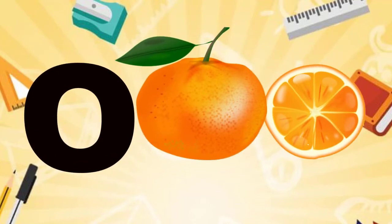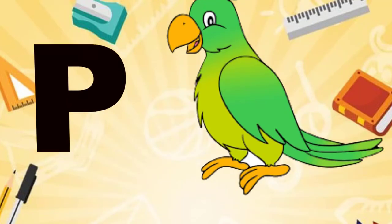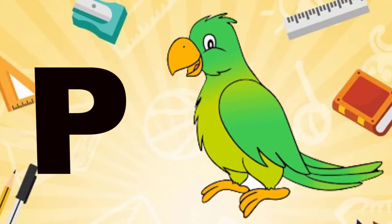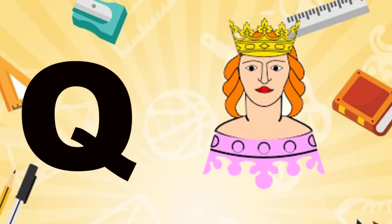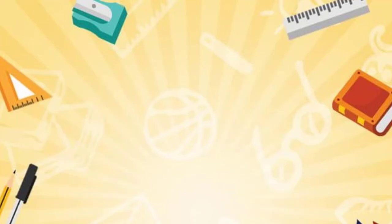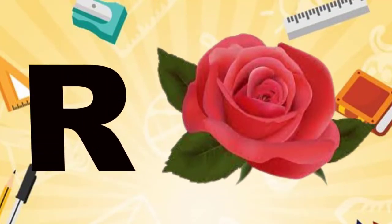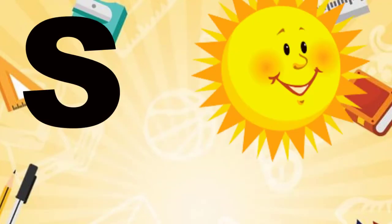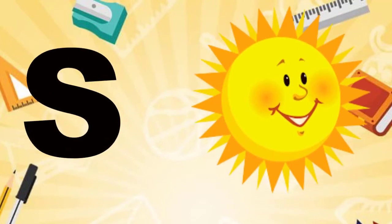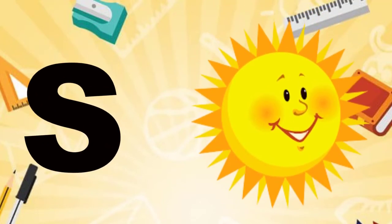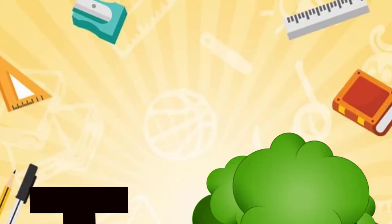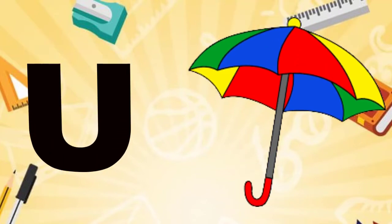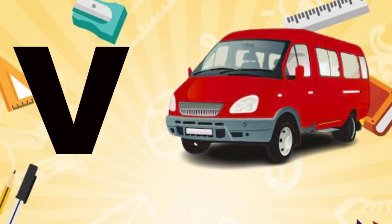O for orange, P for parrot, Q for queen, R for rose, S for sun, T for tree, U for umbrella, V for van.